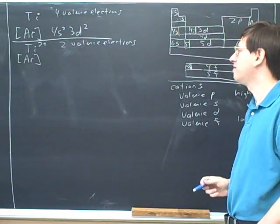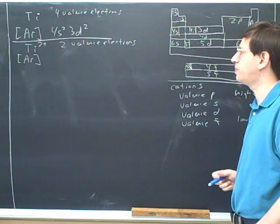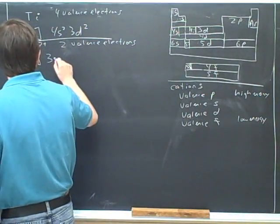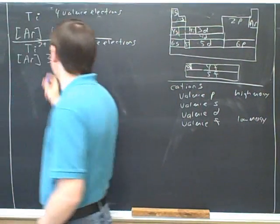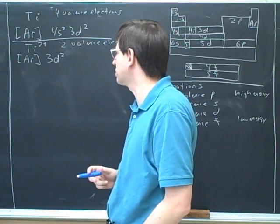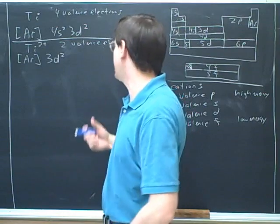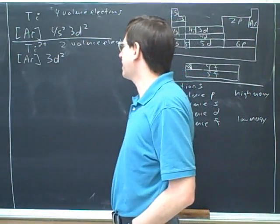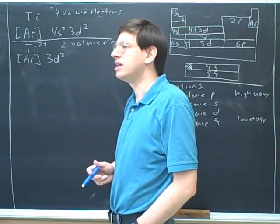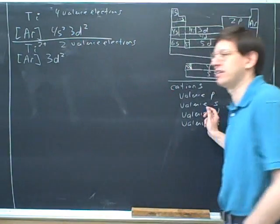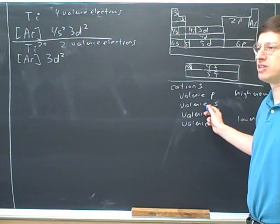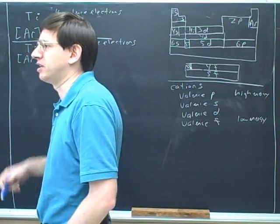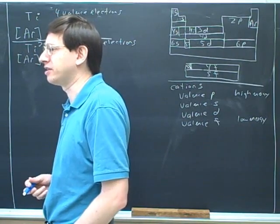Titanium doesn't have a valence F block to deal with. So the next lowest, should it put its electrons in the D or the S? In the D. And how many electrons should it put in the D? Two. Because that's what it has. And now there's none left. So this would be the electron configuration for titanium 2+. Now if you think about it, remember how many electrons can we fit in the D block? Ten.